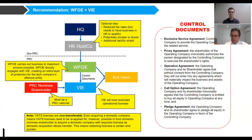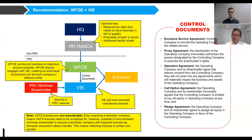These control documents will often include an exclusive service agreement, so the controlling company can only provide the operating company with that service. There'll be a proxy agreement so that we hold the shareholders' rights. There'll be an operation agreement so the WFOE can control how the VIE is operating. And then we have a call option so we can buy the equity, or get a nominee to buy the equity — because the WFOE would not normally be able to buy the VIE directly, as then we wouldn't need the VIE.